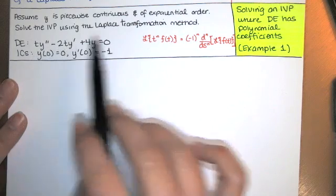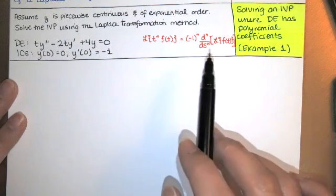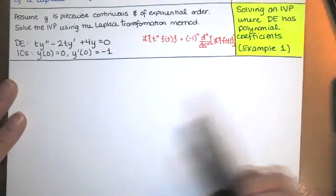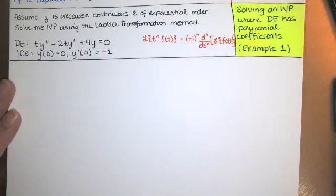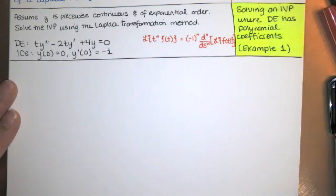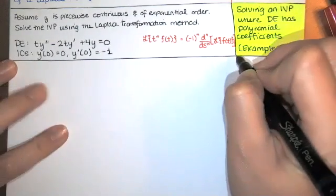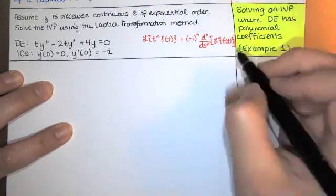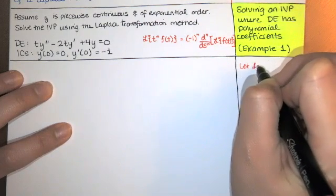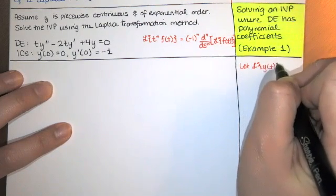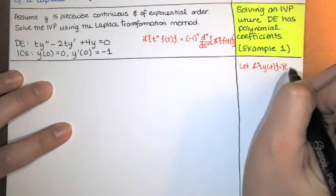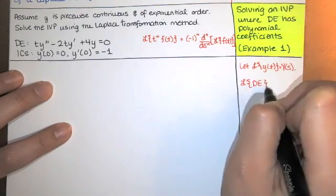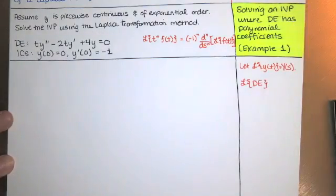Since we have variable coefficients, we have to use this theorem, and that means we're going to end up with a differential equation in Y of s rather than just an algebraic equation involving Y of s that we need to solve. But we start in exactly the same way — we always introduce our notation. So we let the Laplace transform of little y equal big Y. Then we compute the Laplace transform of the differential equation and substitute in the initial conditions.